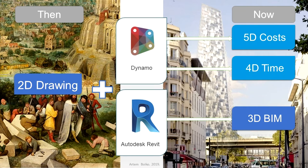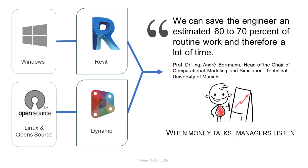I believe that in 5-7 years our work in system planning will be almost fully automated. Dynamo is a graphical programming interface that lets you customize your building information workflow. Through the exploration and application of practical concepts, Dynamo for Revit project teams can anticipate improved efficiency and productivity through various phases of a project.